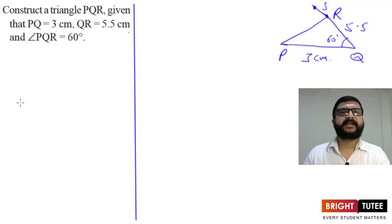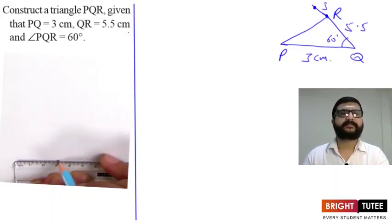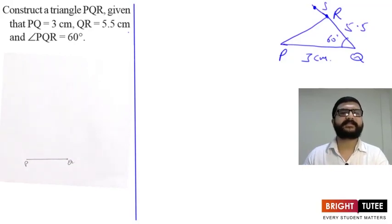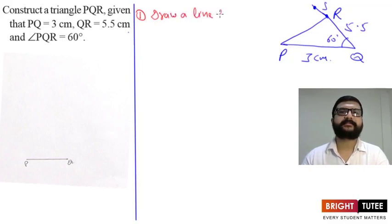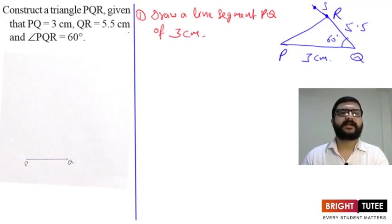First of all we need a line segment PQ of length 3 centimeters. We will also be writing the steps of construction. So the first step is: draw a line segment PQ of 3 centimeters.